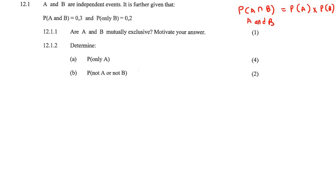Now it says P of A and B is 0.3, P of only B is 0.2. Then it says, are A and B mutually exclusive? Motivate your answer.